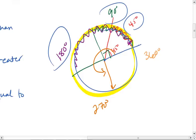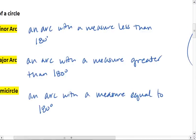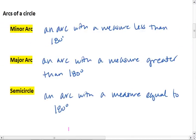That arc of 270 degrees, which is right here, would be a major arc. So a minor arc has a measure less than 180, a major arc has a measure that's greater than 180, and a semicircle is an arc that is equal to 180.